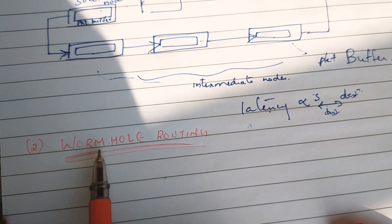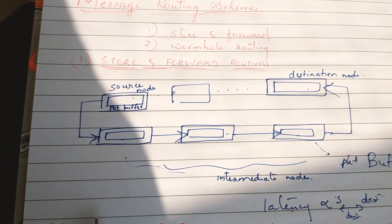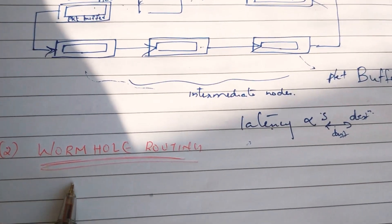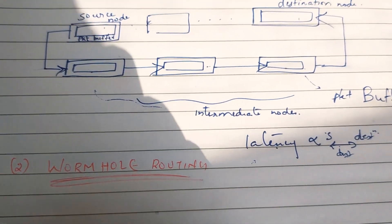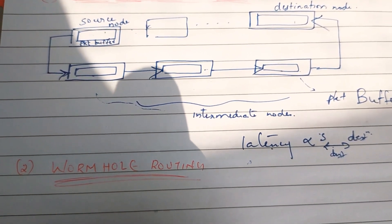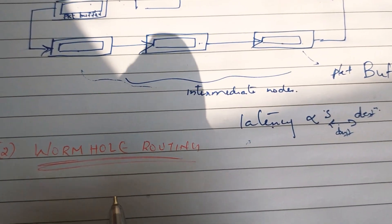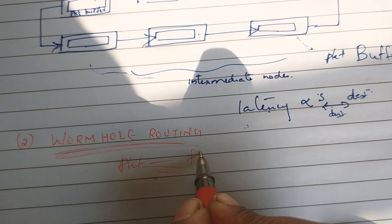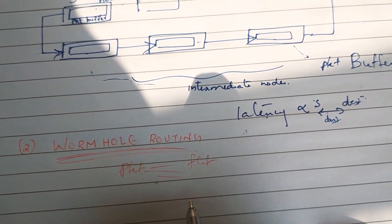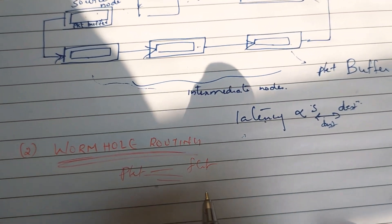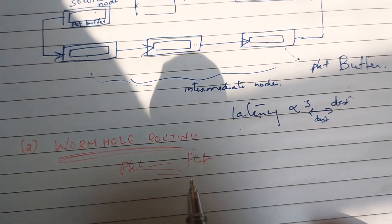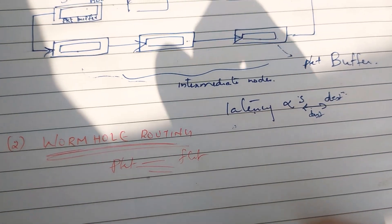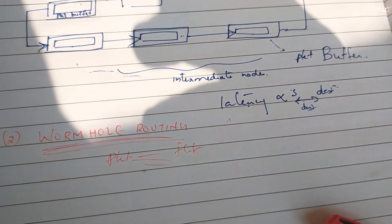Next is wormhole routing. In wormhole routing, we divide the packet into smaller units called flits. The packets are subdivided into flits, and flit buffers are used — these are small hardware buffers at each router.